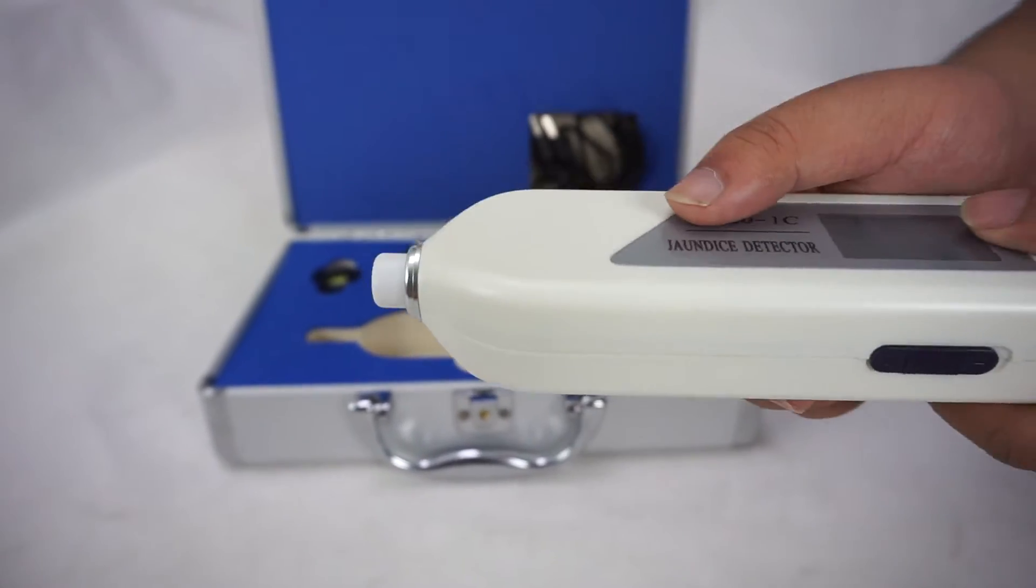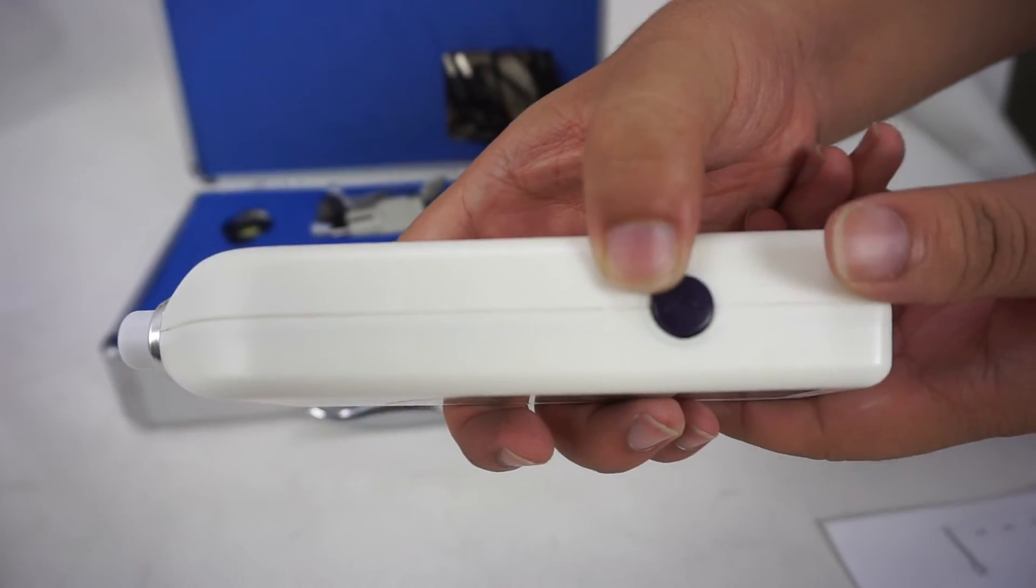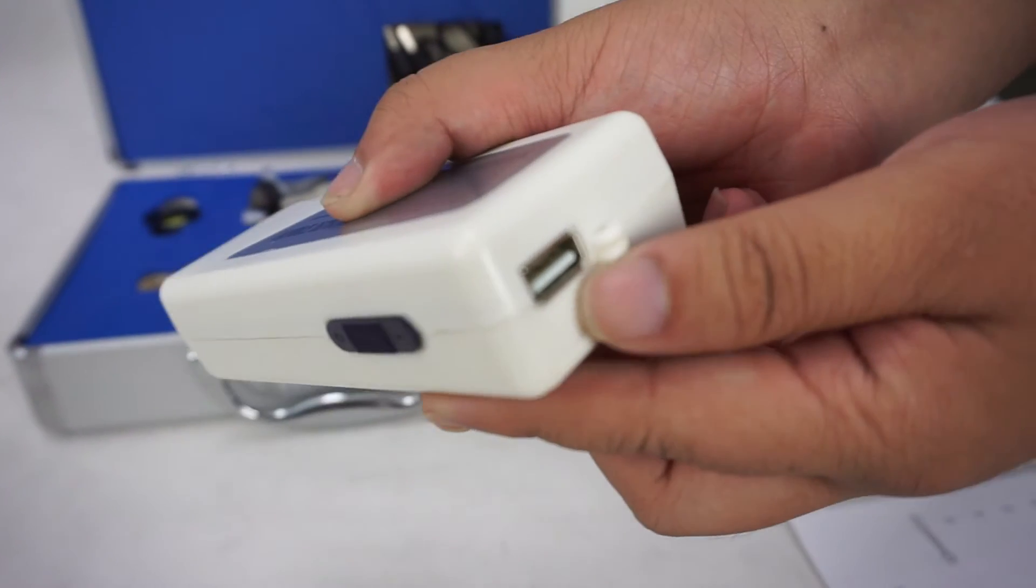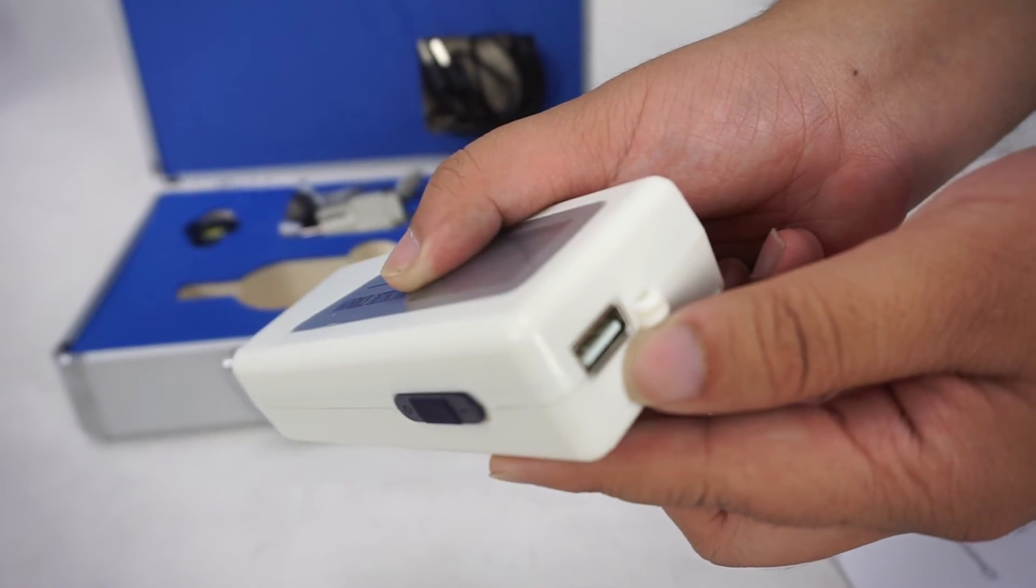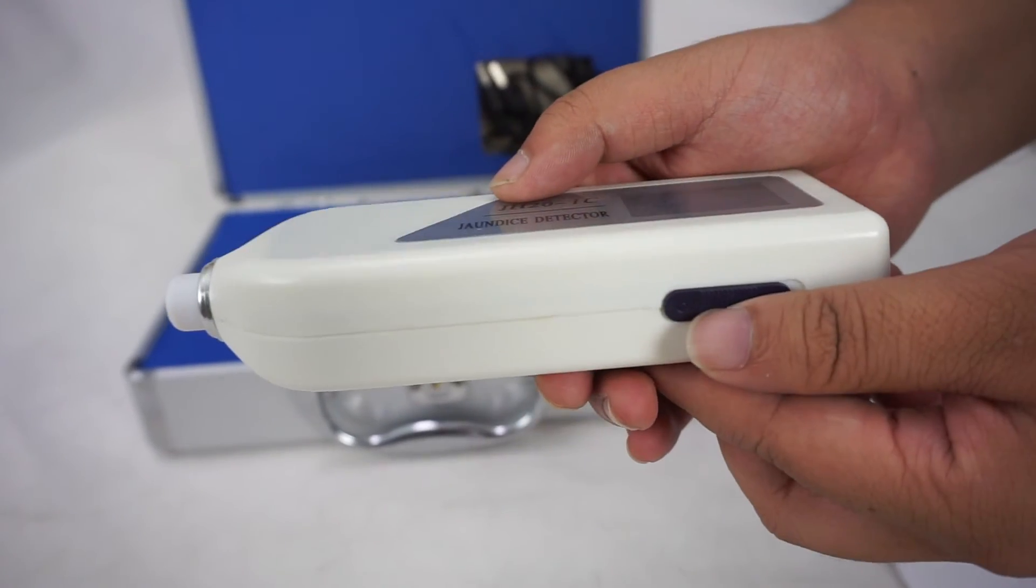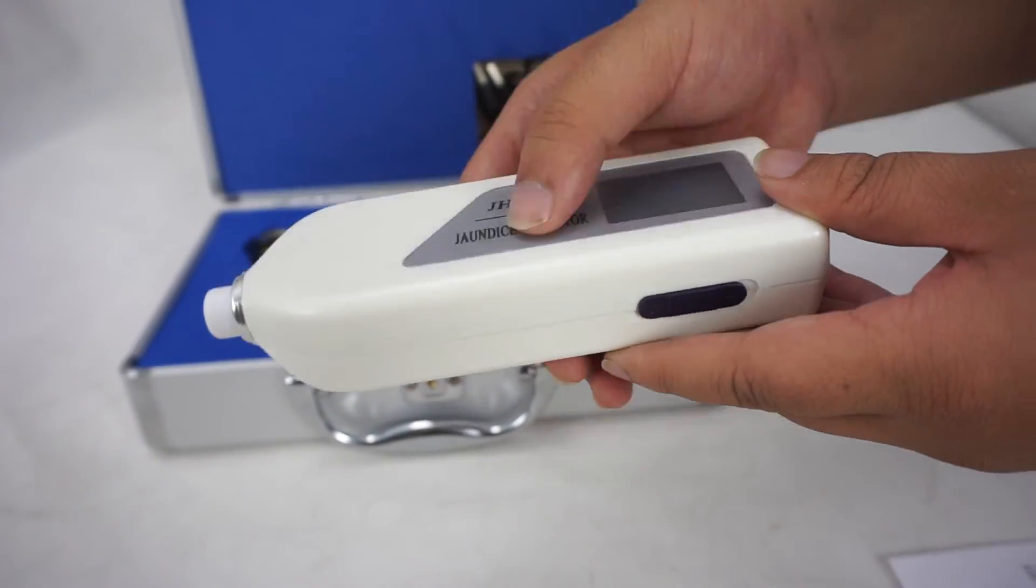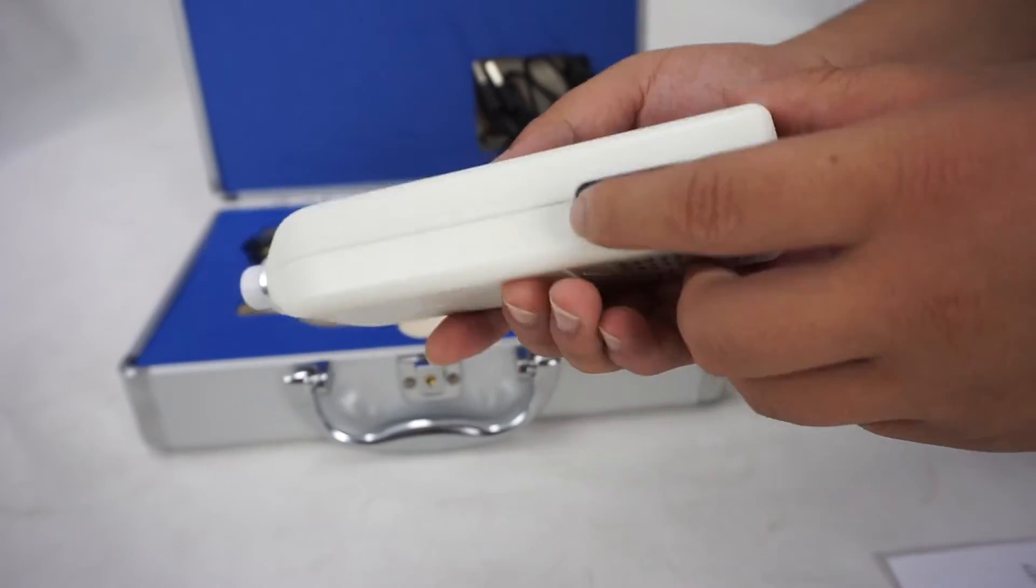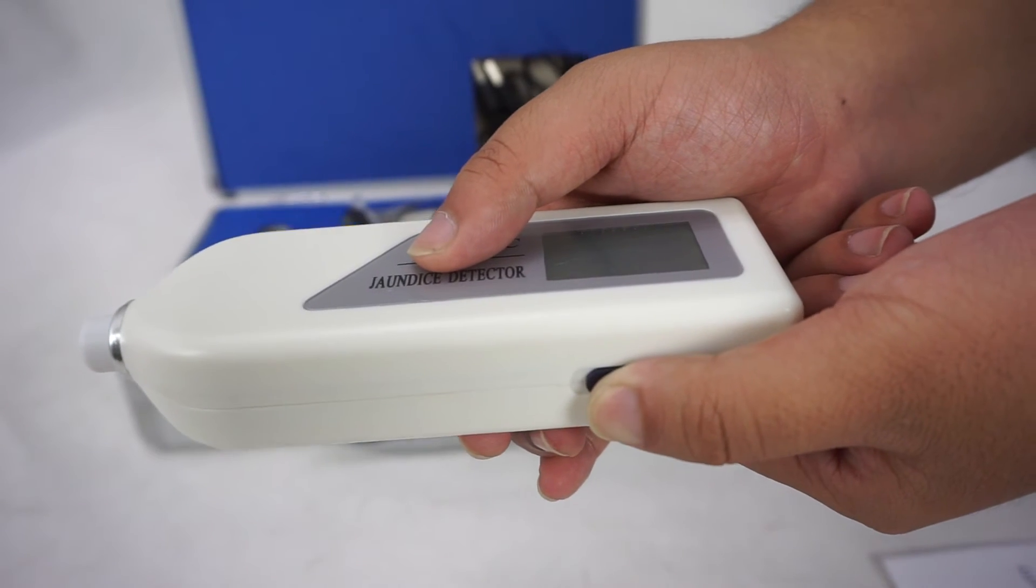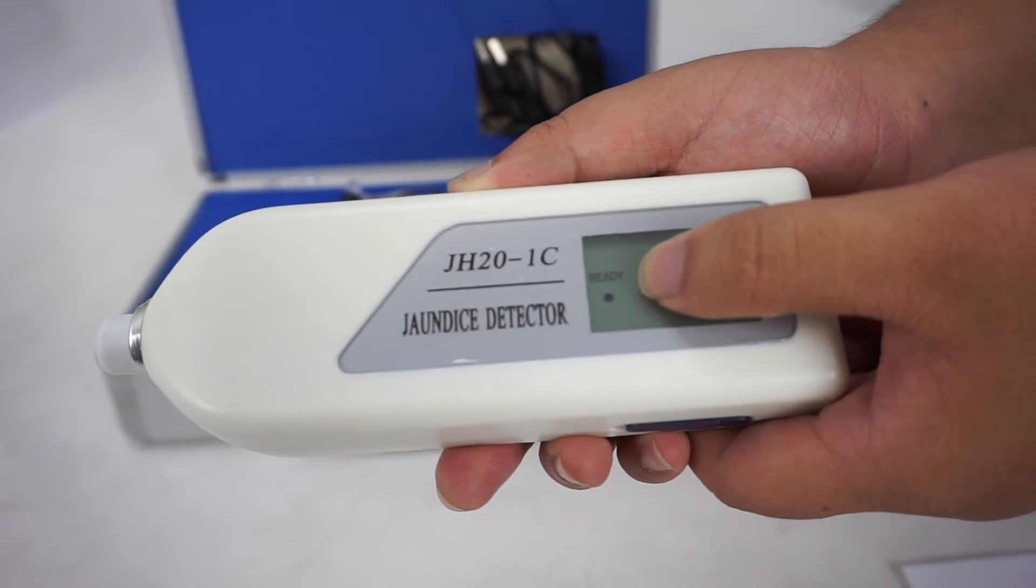The machine has a measuring probe, reset button, and USB interface. And before using the machine, you should check the machine if it is working or not. Let the machine turn on. You will see the ready indicator light.